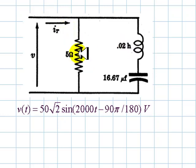Let's see, we are given three elements: 5 ohm resistor, 20 mH inductor, and sixteen and two thirds of a microfarad capacitor.